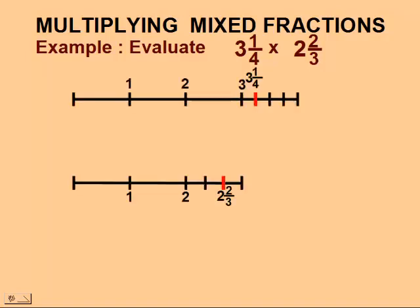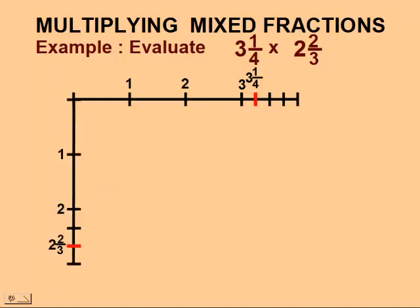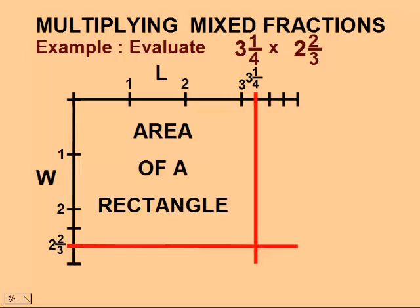First we'll represent these two values using two number lines. Then, to show multiplication, we'll set them up in terms of a grid. We'll use the two number lines to be like the length and width for a rectangle, and our goal is to find the area of this rectangle.